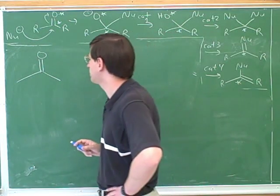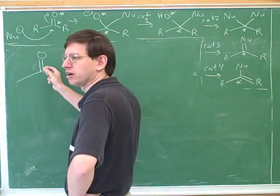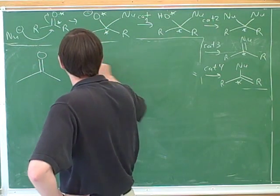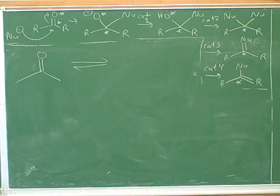Last term we saw that there's always an equilibrium between aldehydes and ketones and the enol form. So let's draw the enol form here. What would the enol form of this ketone be?